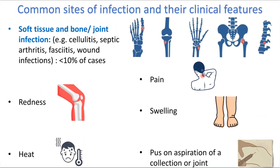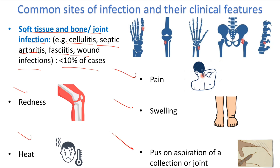Soft tissue and bone joint infections also account for less than 10% of cases, for example cellulitis, septic arthritis, fasciitis, and wound infections. The patient will have clinical symptoms of inflammation like redness, heat, pain, and swelling, and pus on aspiration of a collection or joint.